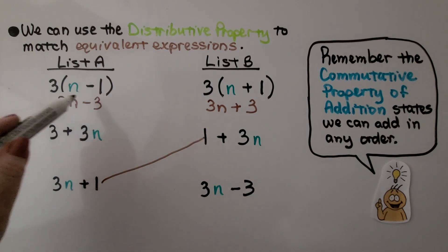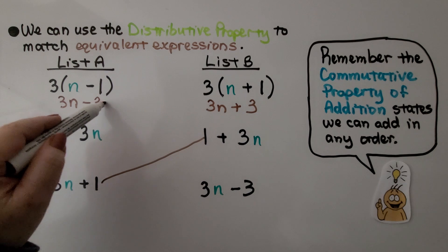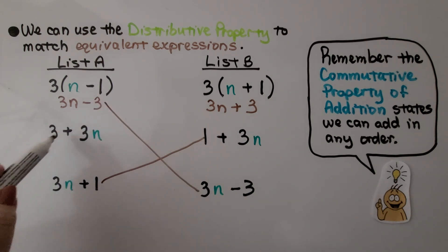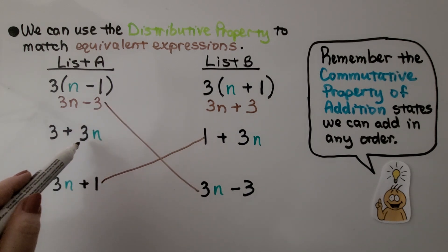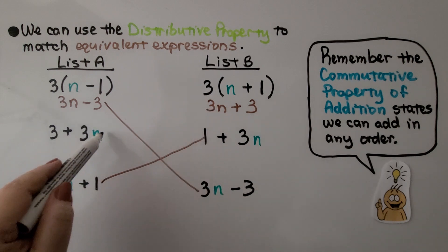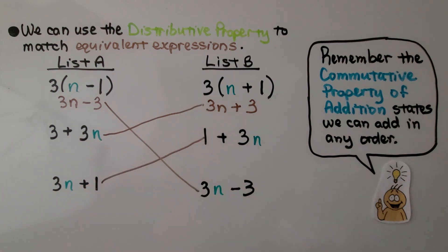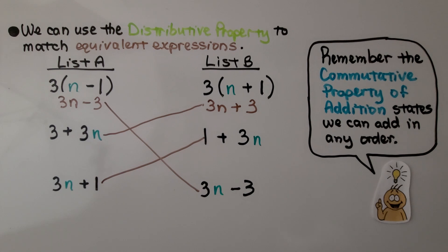We have 3n minus 3 that matches down here, and 3 plus 3n — we can add in any order, they're just switched around, so these match. By using the distributive property, we were able to find out which expressions were equivalent.